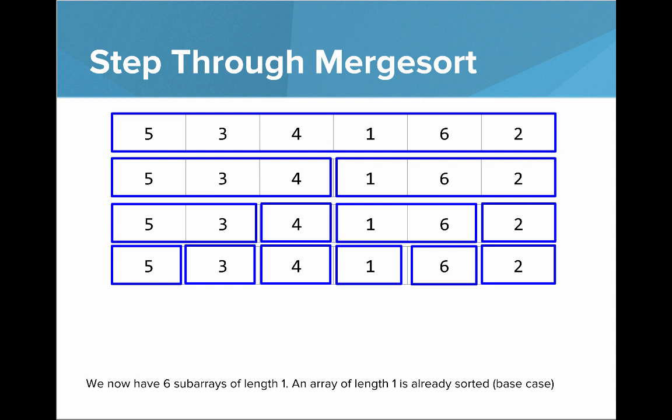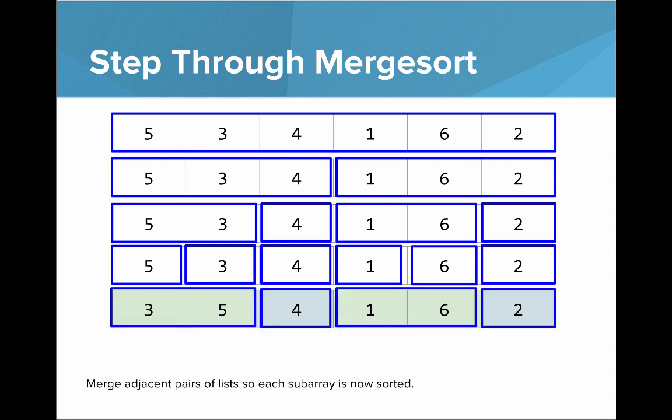It's already sorted, and now we're in the merge step. We merge adjacent pairs of lists so each sub-array is now sorted. You can see we've merged 3 and 5 to be sorted, the 4 is sorted by itself, we've merged 1 and 6 to be sorted, and the 2 is sorted. So we're merging all these smaller, simpler arrays.